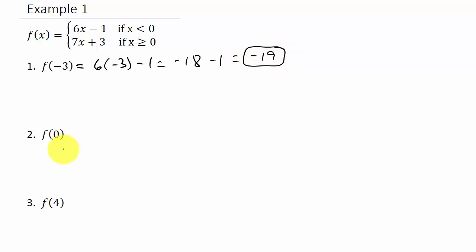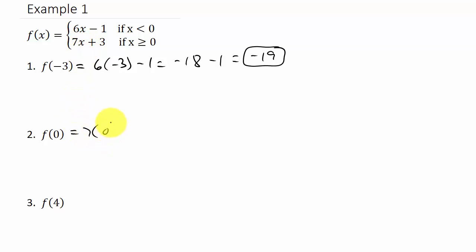Now let's look at f of 0. Which piece does that fall into? This is when x is greater than or equal to 0, so we plug 0 in for x into 7x plus 3. That's 7 times 0 plus 3, which is 0 plus 3, which equals 3.